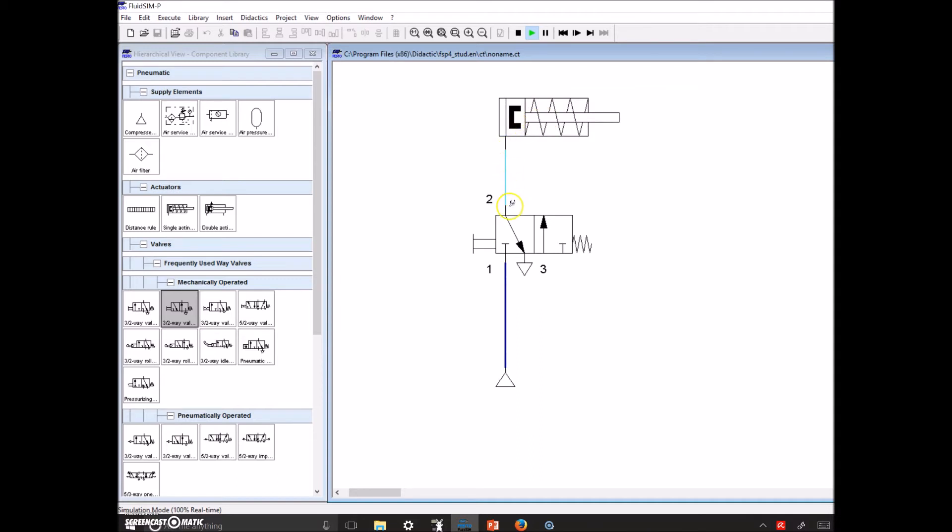And so the spring pushes back and exhausts the air from 2 to 3. Excellent. Everything else is the same. Port number 1 is our supply. Port number 2 is going to the actuator. Port number 3 is the exhaust.